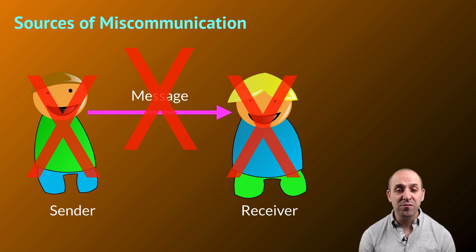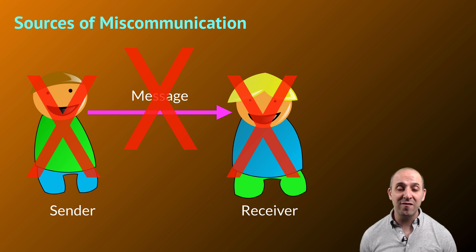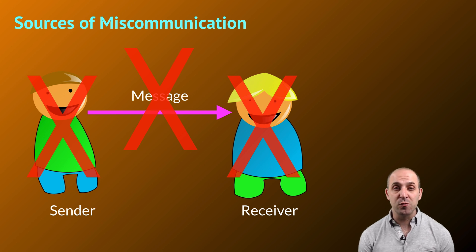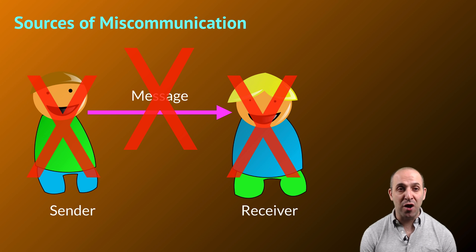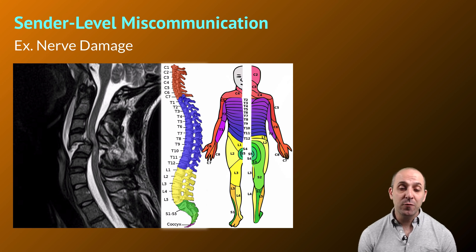We can have sender problems, message problems, and receiver problems. What we're going to do in this video is give you some examples — though certainly not an exhaustive list — of different types of miscommunication problems at each level in the communication process. We'll start with sender-level miscommunication, and a great example of this is nerve damage.